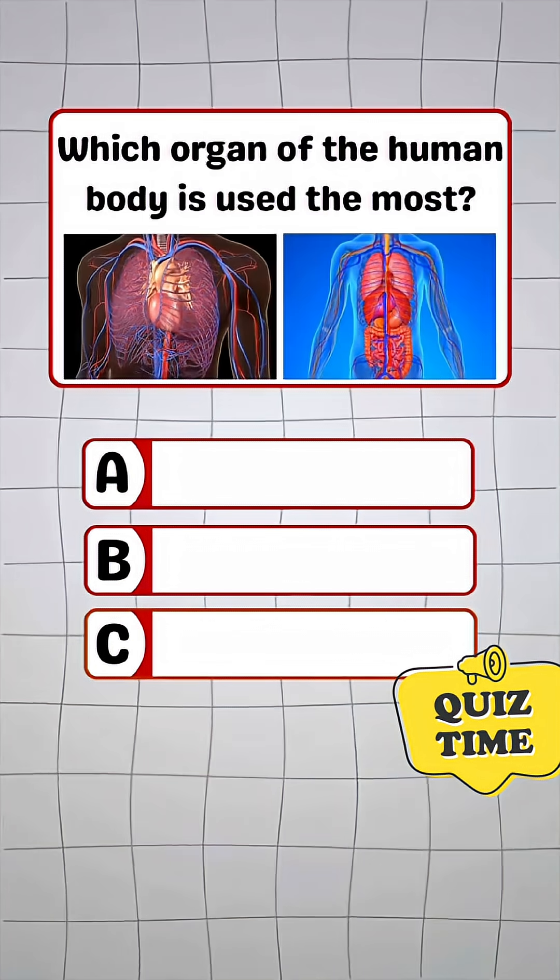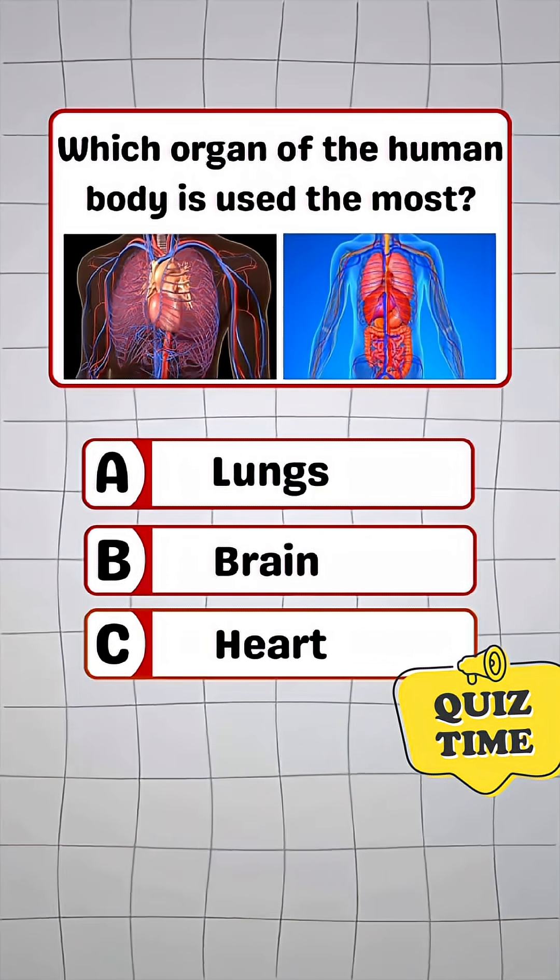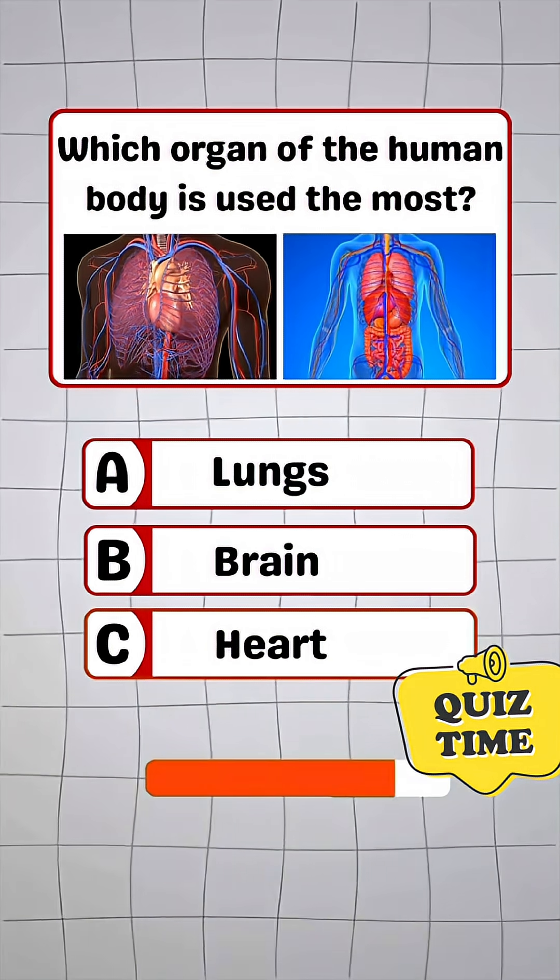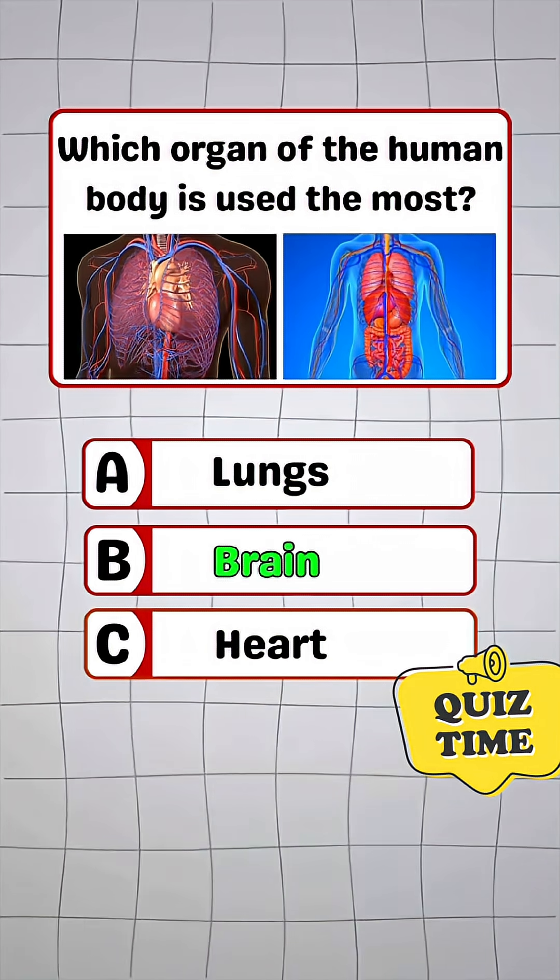Question 4. Which organ of the human body is used the most? Answer B. Brain.